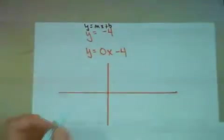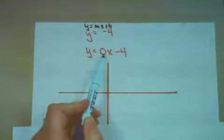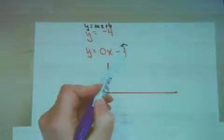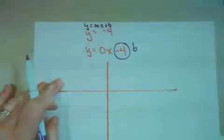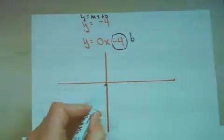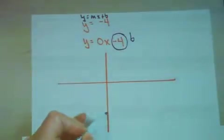So really, I'm trying to graph the equation y equals 0x minus 4. The minus 4 is my b value. So I need to come to my coordinate axes and go down 1, 2, 3, 4.